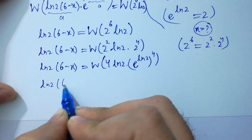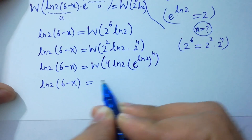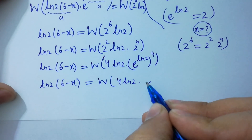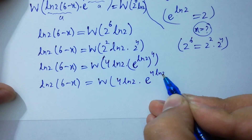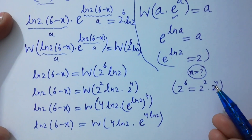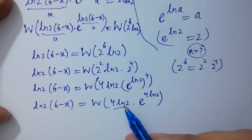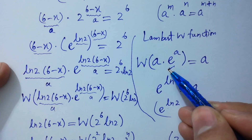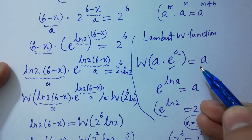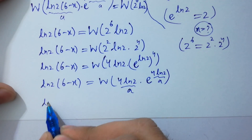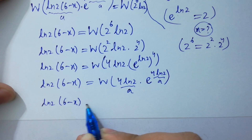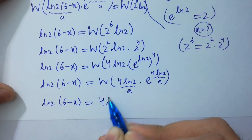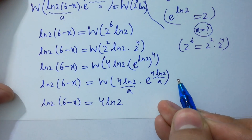Natural log 2 times 6 minus x equals W of 4 natural log 2 times e to the power 4 times natural log 2. Again, you can see this matches the form a times e to the power a, where a is 4 natural log 2. So W of a times e to the power a equals a, giving natural log 2 times 6 minus x equals 4 natural log 2.